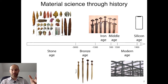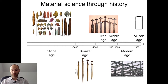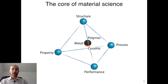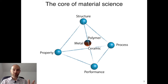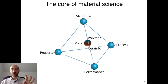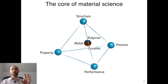Material science is very complex, which is probably one reason it is a recent formal field. Some of you may have chosen it because it seemed like a mix of physics and chemistry, but it's actually a bit more than that. There is now more or less a consensus in the definition, represented by these tetrahedra, which you'll probably see in most material science lectures. Material science is the study of the relationship between structure, property, process, and performance.